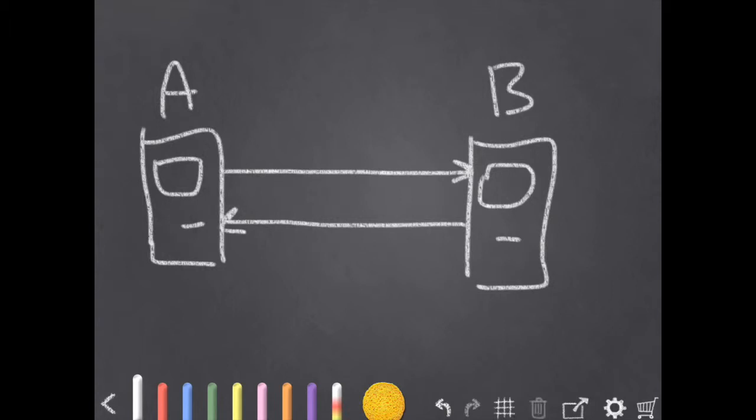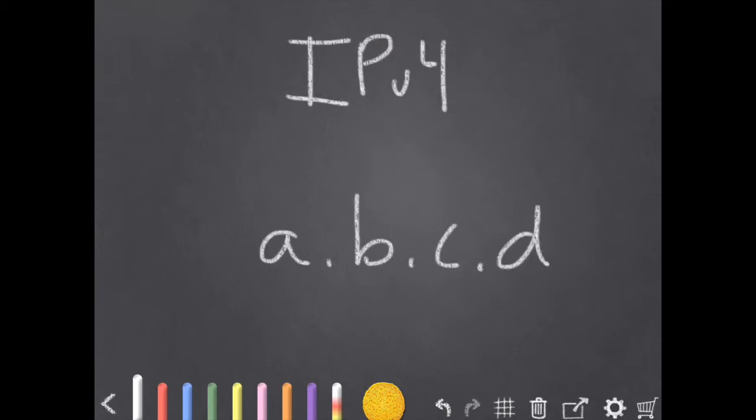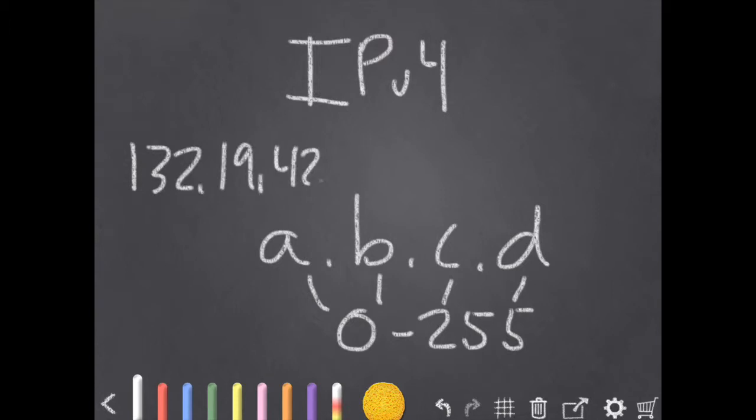Now currently most IP networks are running what is called IPv4. So an address on these networks looks like this. It's four numbers separated by periods and each of these numbers is in the range from 0 to 255. So for example 132.19.42.16 would be a valid IPv4 address.